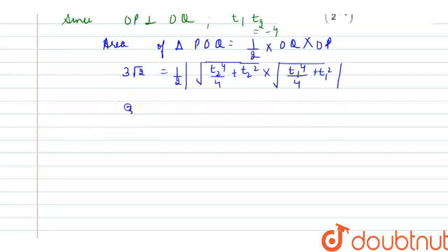This would be expression for the area of the triangle. Now, proceeding forward, 3 root 2 would be equal to 1 by 2 into 4, I have taken outside. Inside, we are left with combined root of t1 square plus 4, and t2 square plus 4 mod.